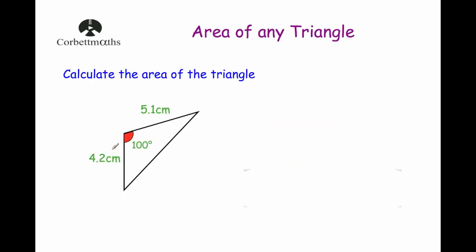This time we've got a triangle with lengths of the sides 4.2 centimeters, 5.1 centimeters, and the angle between them is 100 degrees. So again, let's write down the formula: the area equals ½abSinC. Substituting the values: ½, let's call this one a, so times by 4.2 multiplied by 5.1, and then times by the sine of the angle, and the angle is 100 degrees.